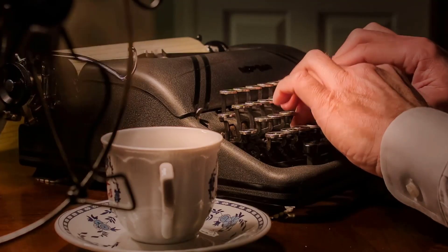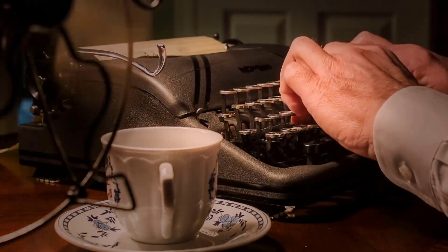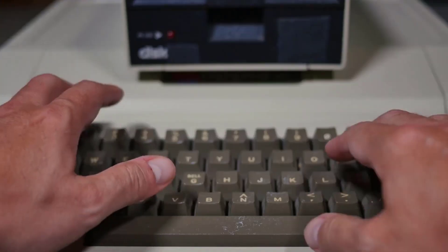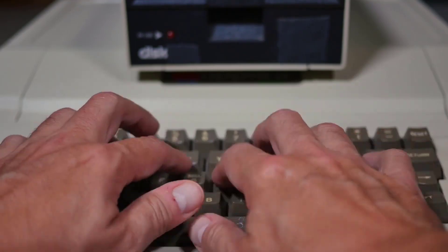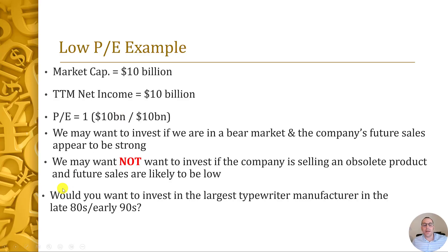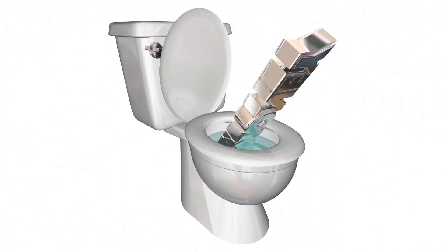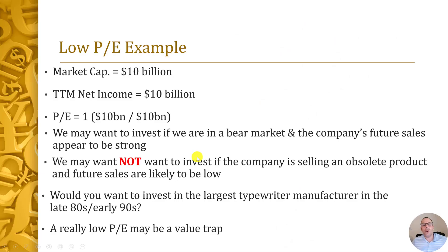Let me give you an example. Say in the late 80s the largest typewriter manufacturing company had a PE of one, because in the past 12 months their sales were really high — every company used typewriters. But there's this new invention called a personal computer that's going to take over and there's going to be no need for typewriters. Just because the company had a ton of sales in the past doesn't mean they're going to have a ton of sales in the future. And that's why the PE is so low, because the market knows this. Some investors who felt typewriters would never be replaced put a lot of money in and unfortunately lost a lot. So a really low PE could be a value trap — it may not be an undervalued stock.